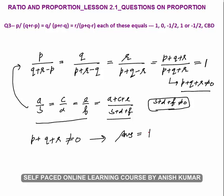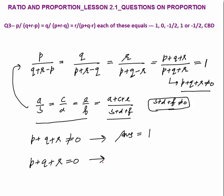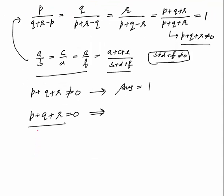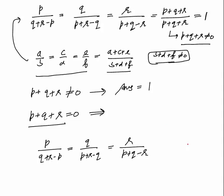But do we know that p plus q plus r is not equal to 0? It may be equal to 0. So a second condition can arise: if p plus q plus r equals 0, we cannot combine the ratios that way and must solve differently. There are only two possibilities — either p plus q plus r equals 0 or it does not. If it does equal 0, we substitute values directly.